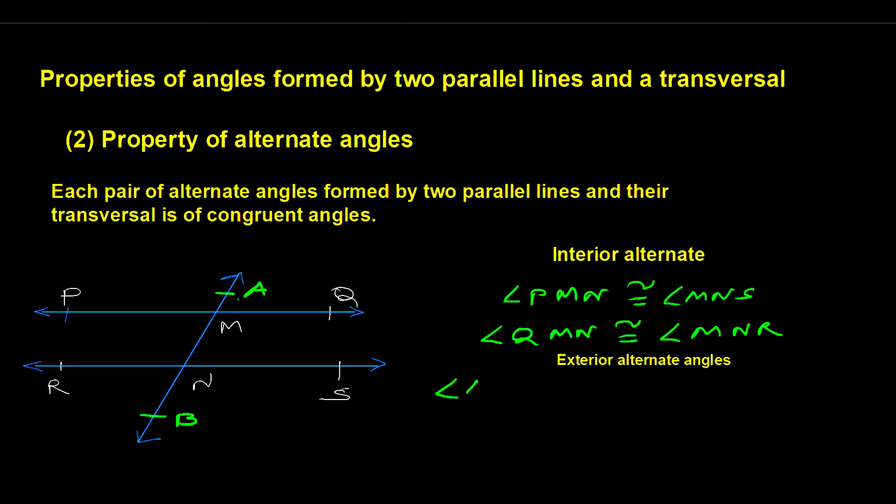Exterior alternate angles: angle AMP is congruent to angle RNB, and angle QMA is congruent to angle RNB.